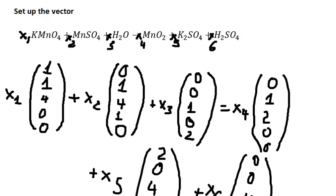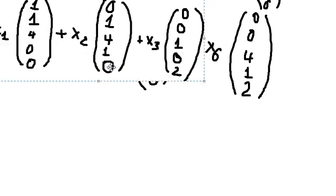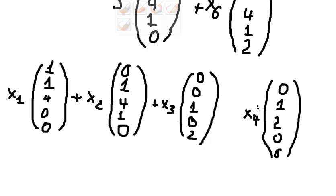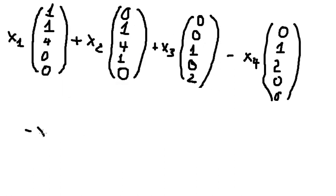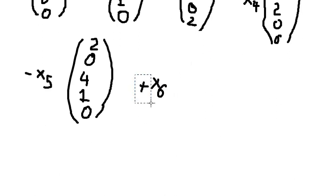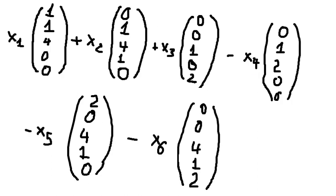After we do it this way, we can set up the matrix equal to zero. That means we put S4, S5, and S6 to the left side. If we move them to the left, we get a negative sign. So S4 has a negative sign, S5 has a negative sign, and S6 has a negative sign, and this equals zero.